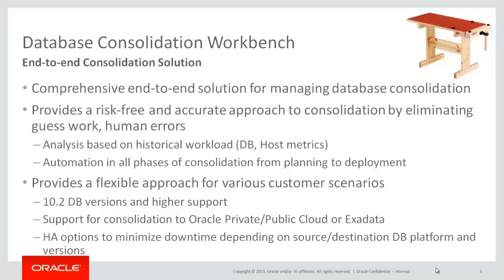Next, we can define the compatibility for the databases — we'll leave that as is. We can specify whether to use existing servers or a phantom server, for example when using Exadata machines or compression. We can also specify the maximum CPU or memory utilization — let's set CPU to 70%. The database consolidation workbench can automatically map the different databases, and we're going to use that for our scenario. Then we can review all definitions and submit.